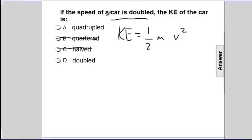What are we doing to the speed of the car? We're doubling it. What number is associated with doubling? Two. So we're doubling v. We'll put a two here.